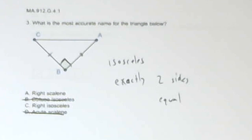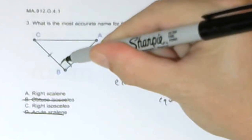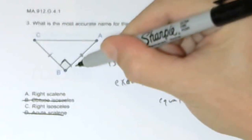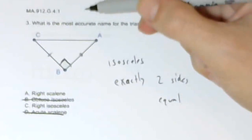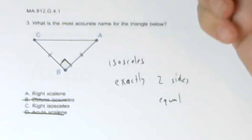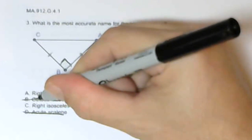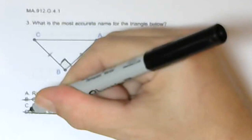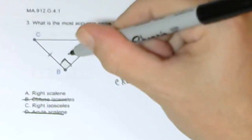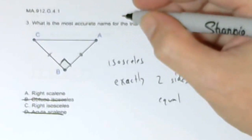What is the most accurate name for the triangle below? It was marked on the test as a right angle — it had a green box and I just darkened it in — so that tells me this is a right triangle; it has one right angle. So it's not going to be obtuse, because a triangle can't have both a right angle and an obtuse angle. It's not an acute triangle because it has a right angle. And it's going to be isosceles because exactly two sides are equal.